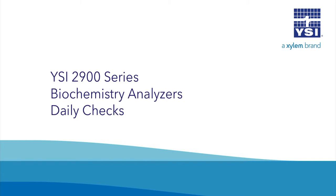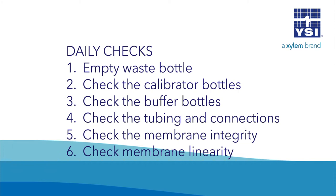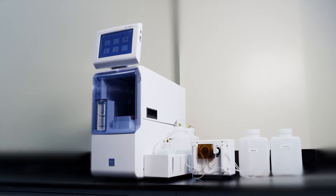YSI 2900 Series Biochemistry Analyzers Daily Checks. Empty waste bottle, check the calibrator bottles, check the buffer bottles, check the tubing and connections, check the membrane integrity, check membrane linearity. This help video demonstrates the basic steps to take daily to keep the instrument fully operational.